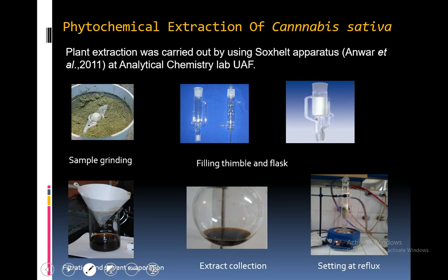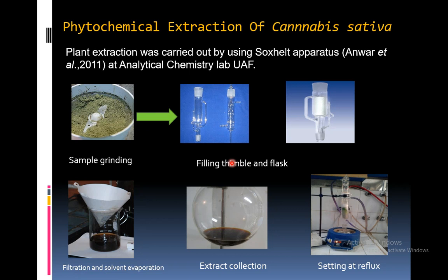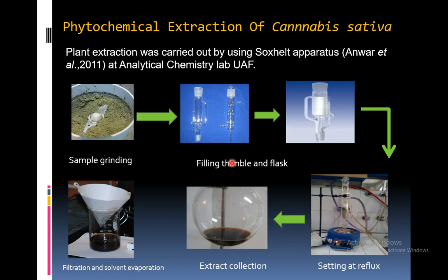Phytochemical extraction of Cannabis sativa was performed using a Soxhlet apparatus in the analytical chemistry lab at University of Agriculture, Faisalabad. It was done by grinding the sample, filling the thimble of the Soxhlet extractor, followed by filtration and solvent evaporation. After filling the thimble, reflux was set up and the extract was collected.